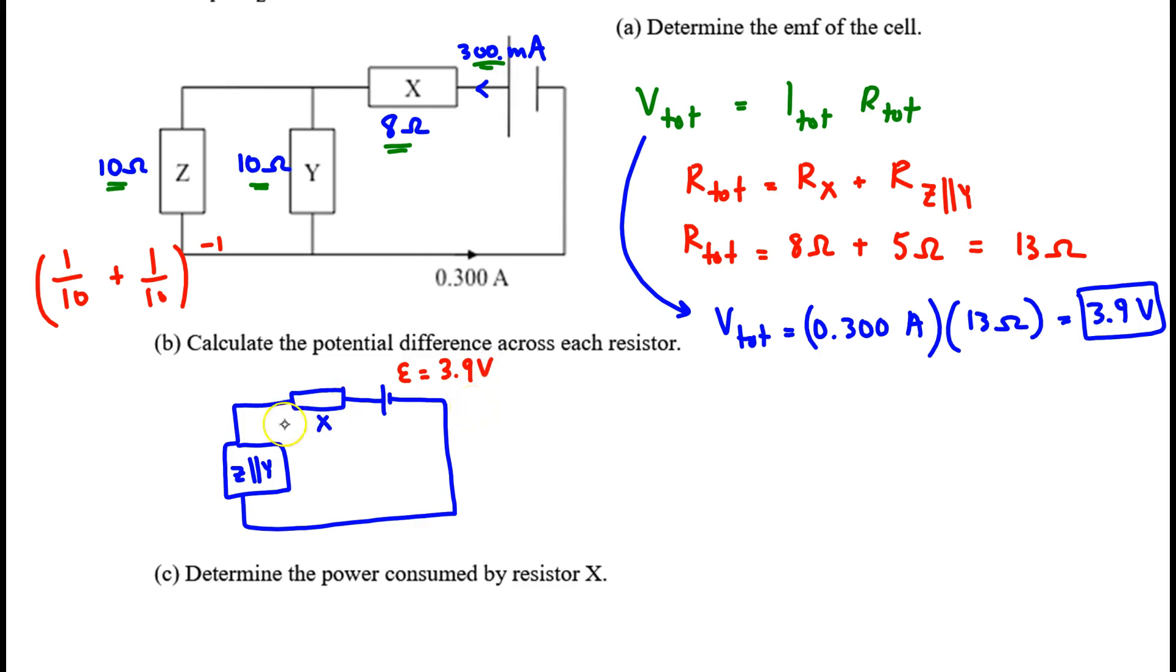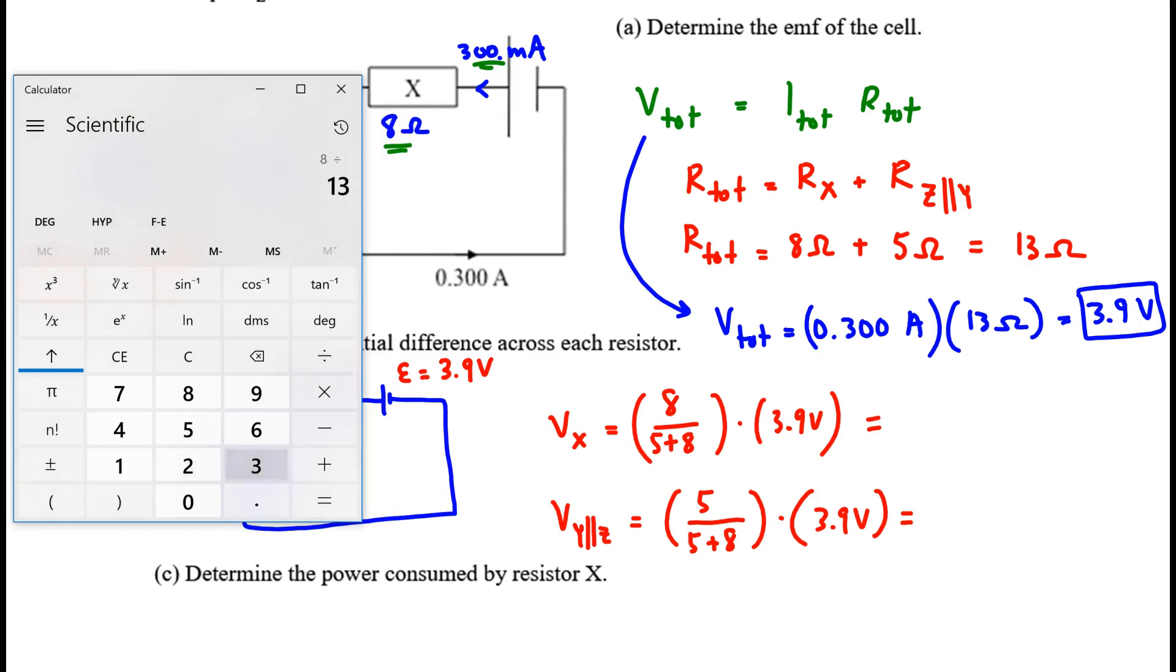So that 3.9 is being shared across this 8 ohm resistor and the 5 ohm resistor. X only consumes a fraction of the EMF. What's the fraction? It's its resistance, the resistance of X, relative to the total. And likewise, Z and Y, that combined resistor, consumes just a fraction of the EMF, which is 3.9. What's the fraction? It's the relative resistance. Its value 5 over the total resistance, 13. When we work this out, 8 over 13 times 3.9, 2.4. And 5 over 13, 3.9, 1.5.